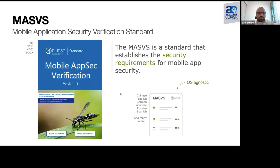The MASVS, or Mobile App Security Verification Standard, is a document that summarizes roughly 80 different security requirements that are specifically defined for mobile app security. You can say the MASVS is complementing the OWASP ASVS project, because the ASVS covers the server side, but the MASVS is really only for the mobile app itself. The document is aimed at giving guidance to developers and also penetration testers.